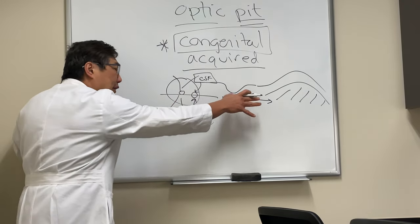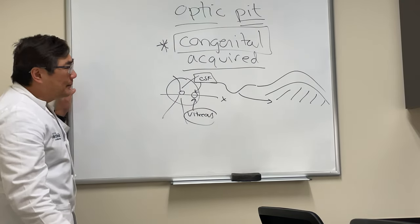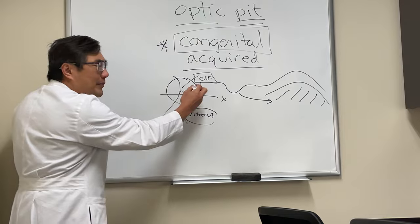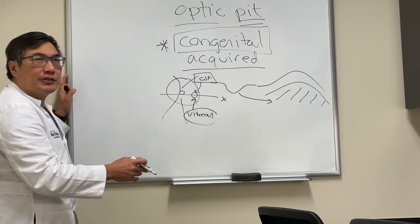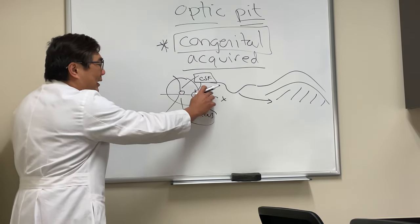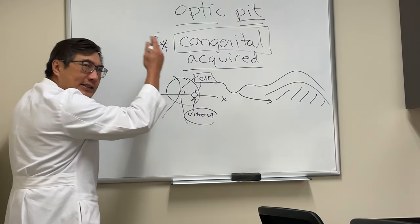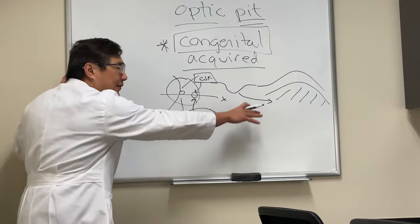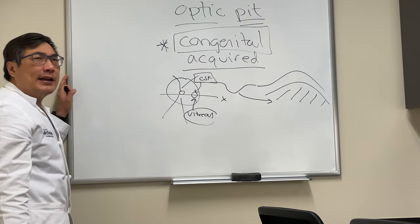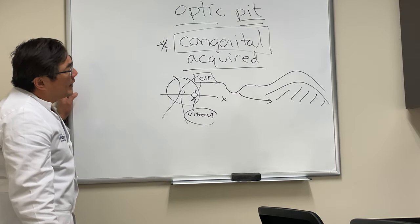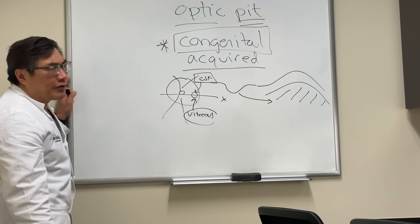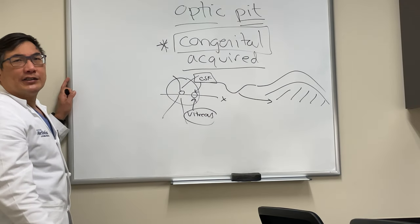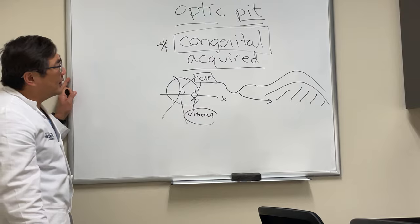Fluid can get under there and go under your macula. Various treatments have been proposed, including vitrectomy to release the vitreous and let the fluid settle out — you can read all about those in the retina section.